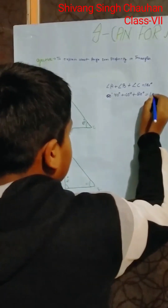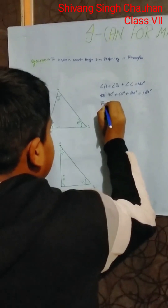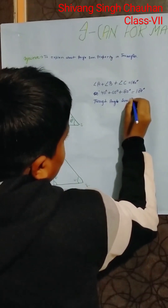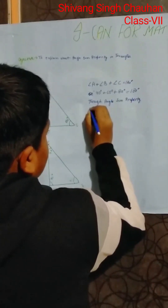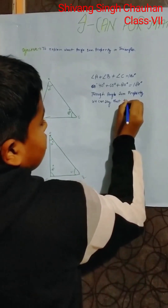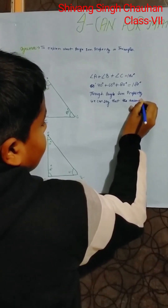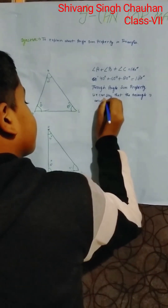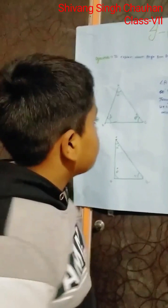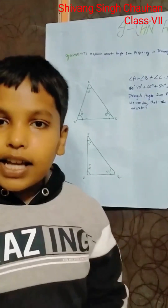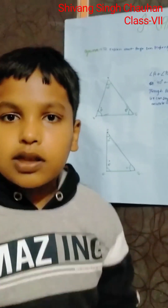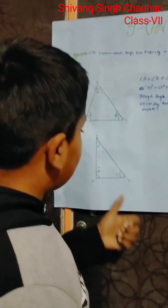The sum of these 3 angles is 180 degrees. Through the Angle Sum Property, we can say that this triangle is accurate. So, this property says that in one triangle there are three angles, and these three angles always sum to 180 degrees. If they do not, the triangle is not possible.